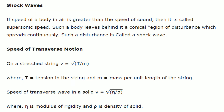Shock waves occur when the speed of a body in air is greater than the speed of sound — this is also known as supersonic speed. Such a body leaves behind a region of disturbance spread continuously behind it, called a shock wave. For the speed of transverse motion on a stretched string: V = √(T/μ), where T is the tension and μ (M) is the mass per unit length.